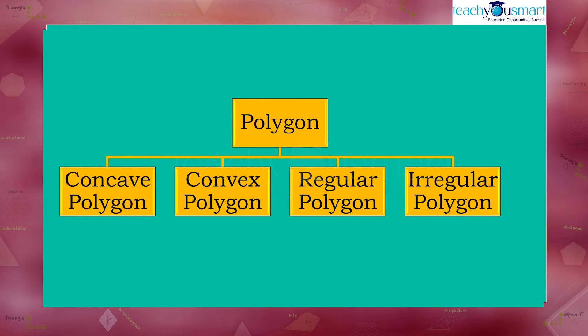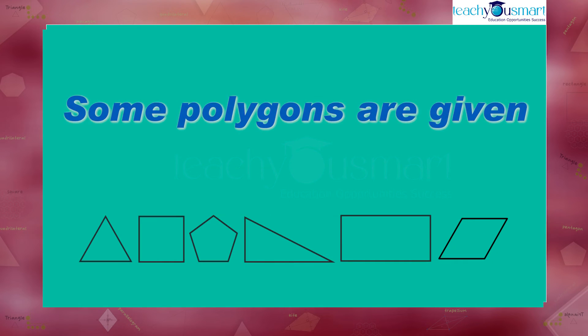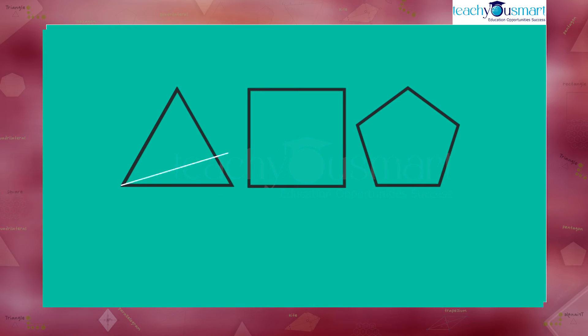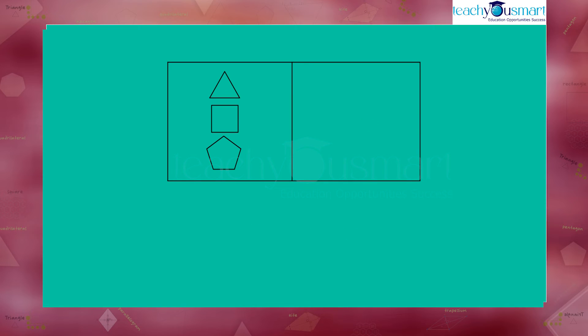Now look at regular and irregular polygons. Here some polygons are given. Let's compare each side and each angle of them. Here each polygon has equal sides and equal angles. Such polygons are called regular polygons.